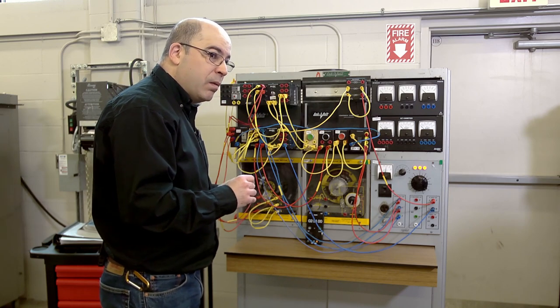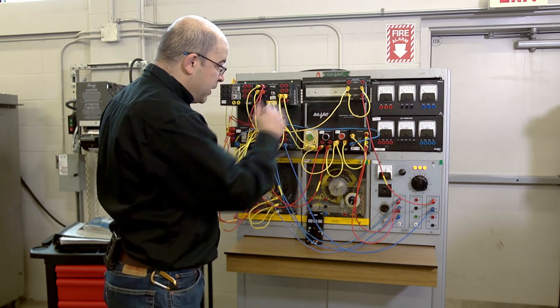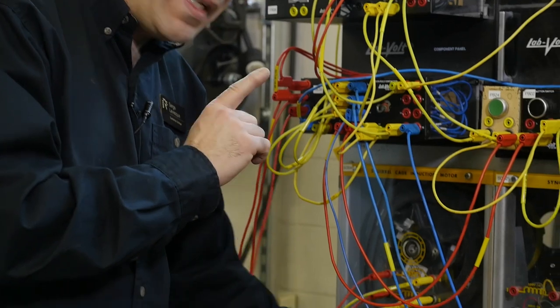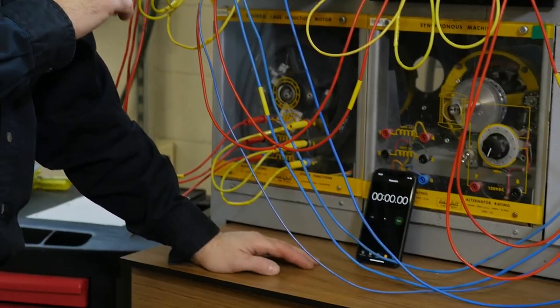So we're going to repeat this, but now I've actually got the DC current. We're going to start it up again, we're going to stop it, but I'm going to turn on the timer once I activate the DC or eddy current brake.